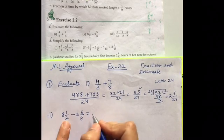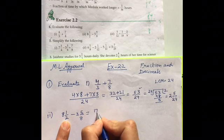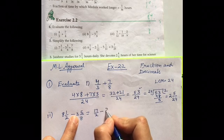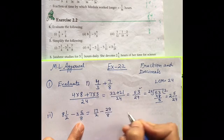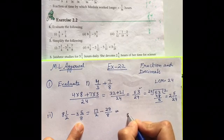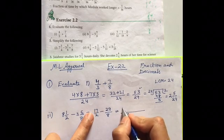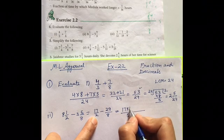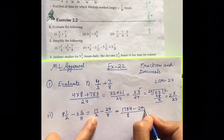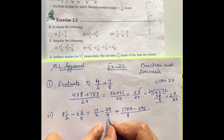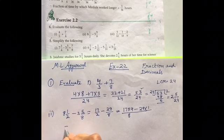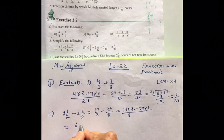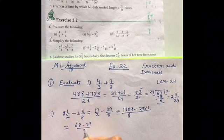Now, the second 8 2 just 16 plus 1 17 upon 2 minus 8 3 is 24 plus 5 29 upon 8. Now, here in this case, the LCM is 8 only. So, write down 17 multiplied by 8 divided by 4 minus 29 multiplied by 8 divided by 8 is 1.